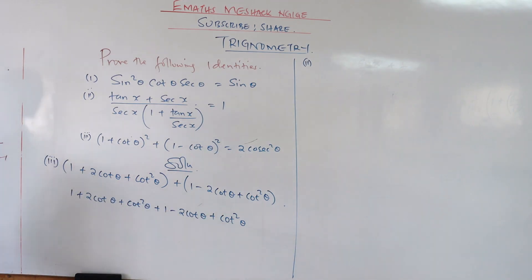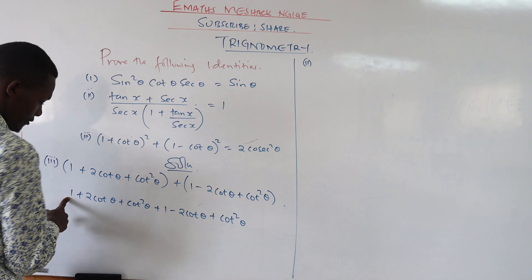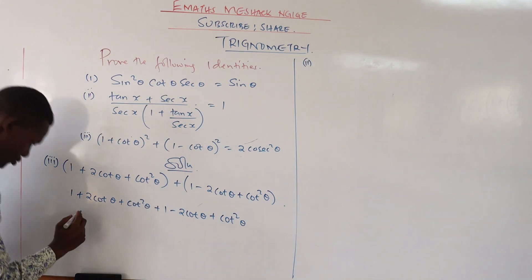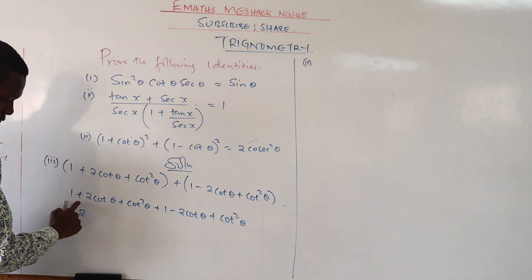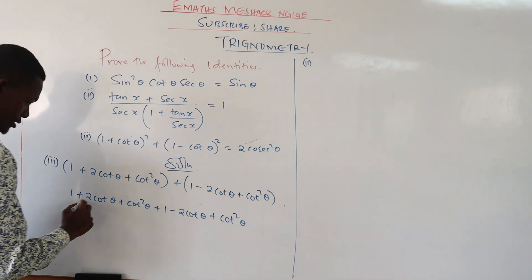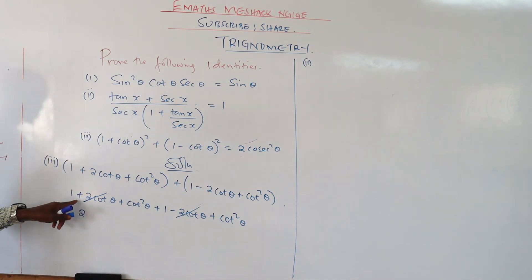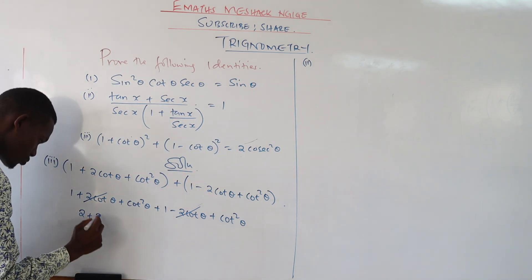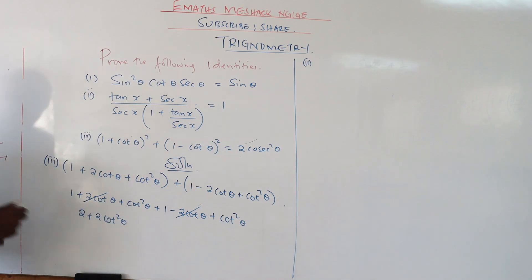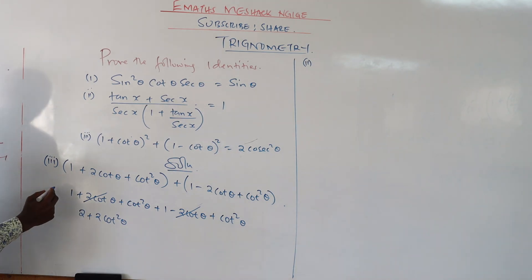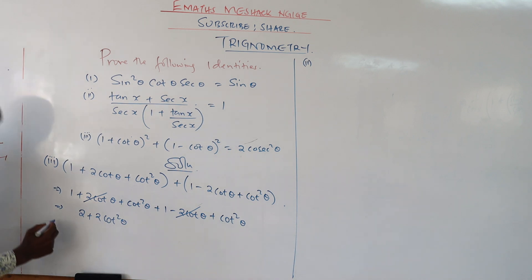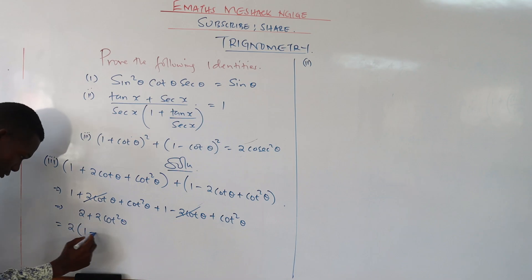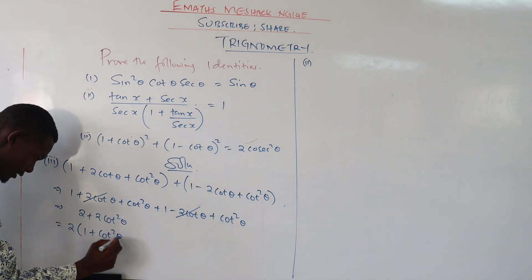Now we collect like terms. We have the constant one and constant one — one plus one gives us two. We have two cot theta and negative two cot theta — these cancel out. Then cot squared theta plus cot squared theta gives two cot squared theta. So we have two plus two cot squared theta. Taking two as a common factor outside, we remain with two times one plus cot squared theta.